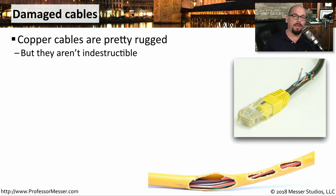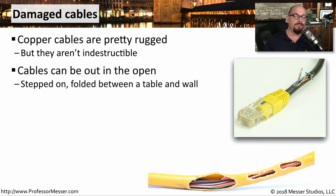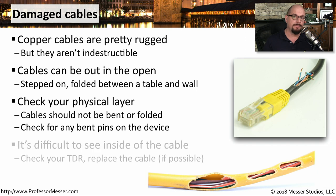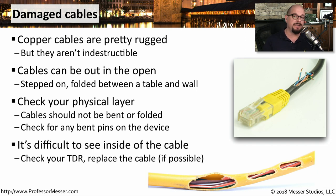The copper cables that we use are pretty rugged, and when we run cables through a wall or over a ceiling, we don't usually have a problem. But very often we have cables used for patches from the wall plugging into printers and other devices. Sometimes they can be stepped on, or a cable can be pushed between a wall and a table, and then you have shorts and opens and problems communicating. If you do run into a cable that looks like it's been stepped on or bent, check the physical layer and make sure the cable is working as expected. You might also want to look at the device the cable's connecting to, because if that cable has been pulled, it might have bent pins inside of the ethernet adapter. Sometimes it's easy to simply replace a patch cable, but other times you may need a TDR to see if there's a short, open, or some other kind of damage inside that cable.